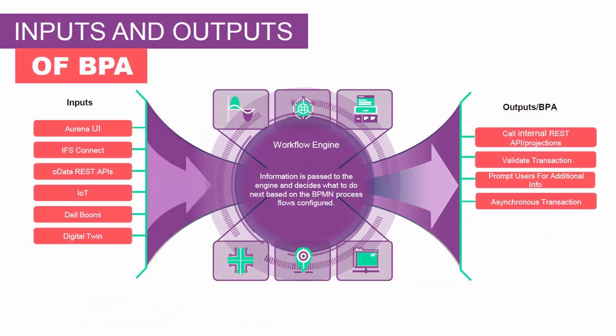Business process automation is really about inputs and outputs. When an input is created — whether from a user on the arena interface, a message from IFS Connect, or an integration using Dell Boomi — based on your process models in the workflow engine, it decides what happens next: calling a REST API, validating a transaction, prompting the user to enter more information, or performing an asynchronous transaction where a background job is submitted and other automations are triggered.